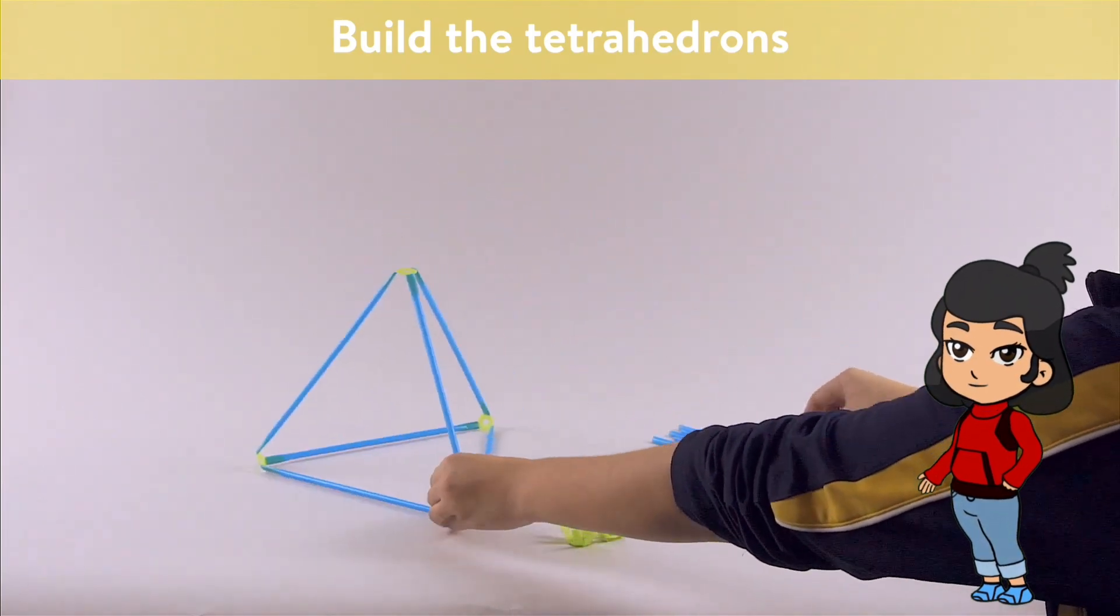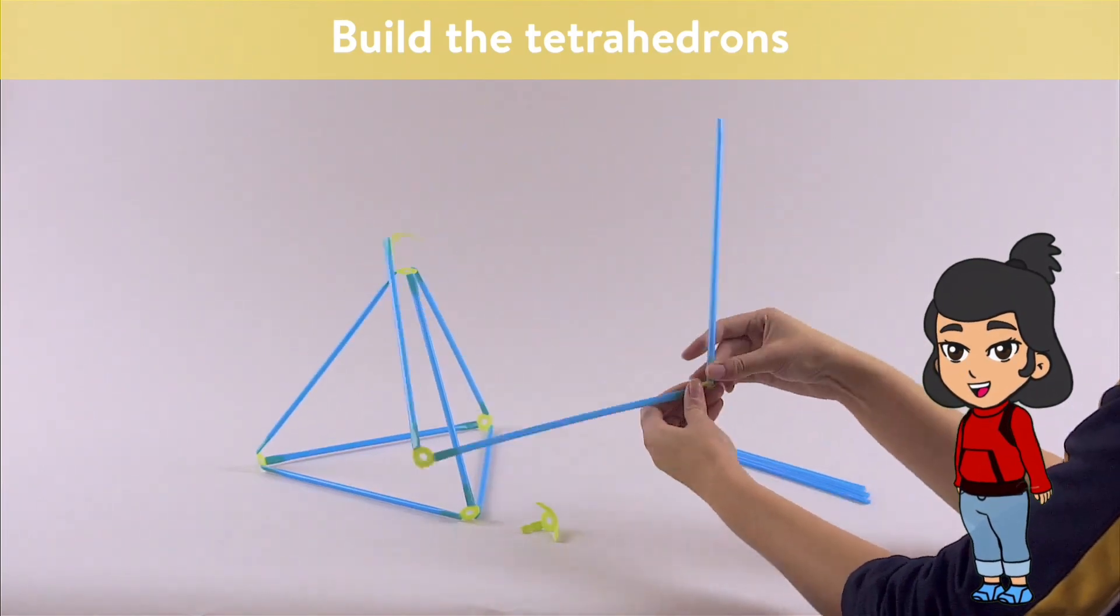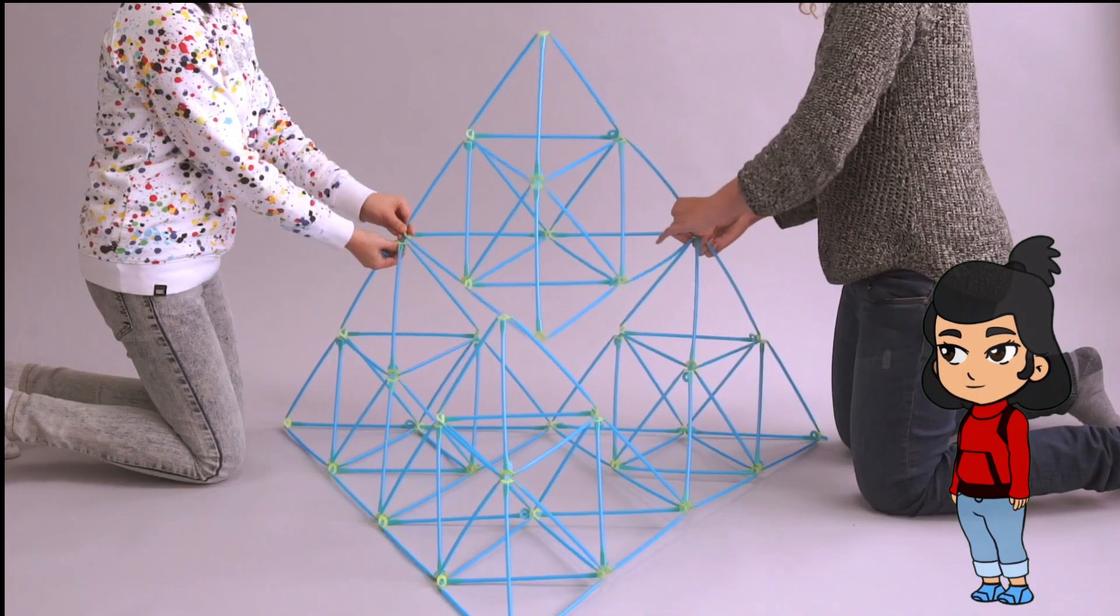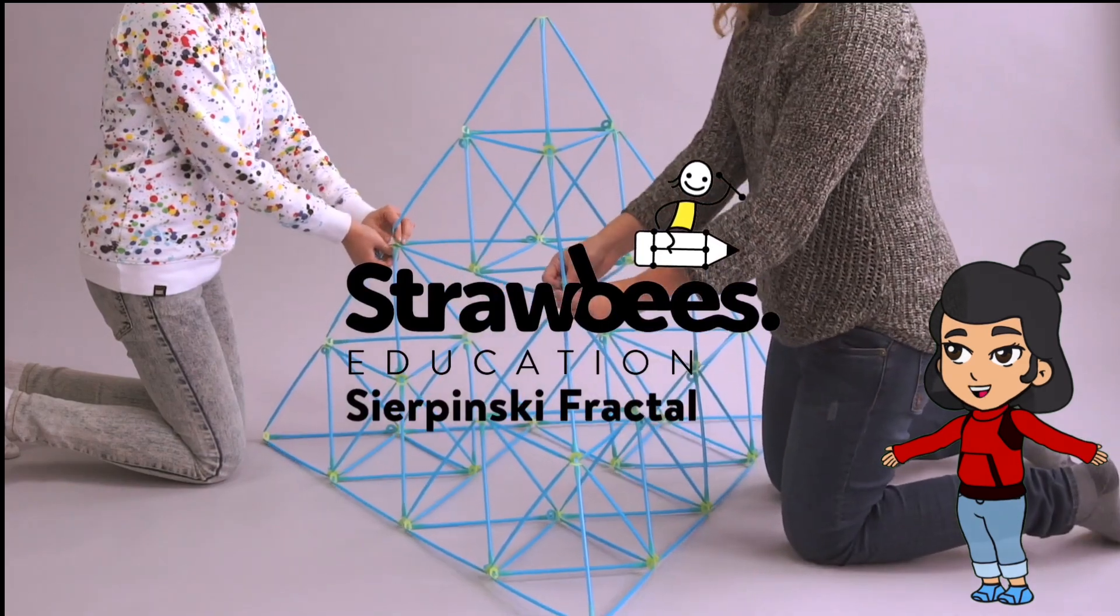And there you have it, your very own 3D triangle, made with Strawbees. In our next video, we'll learn how to make a big Sierpinski pyramid.